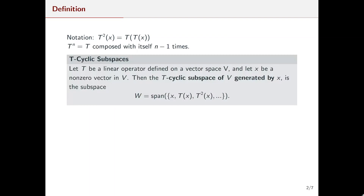Now we can talk about T-cyclic subspaces. If we let T be a linear operator defined on a vector space V and let x be a non-zero vector in that vector space V, then the T-cyclic subspace of V generated by x is the subspace W equal to the span of the set of vectors x, T of x, T² of x, and so on. Since W is a subspace of V, it's possible that W is V. In this case, we call x a cyclic vector.